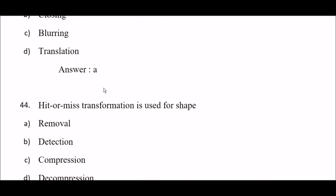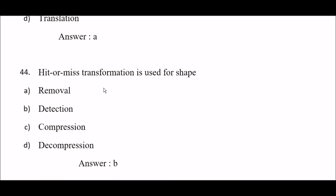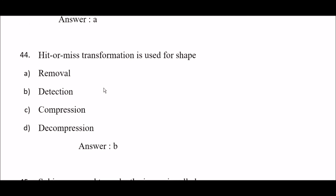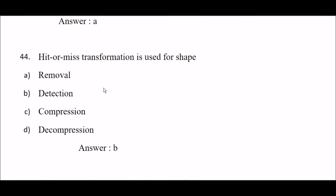Next question: hit-or-miss transformation is used for shape — option A: removal, option B: detection, option C: compression, option D: decompression. The right answer is option B — detection.